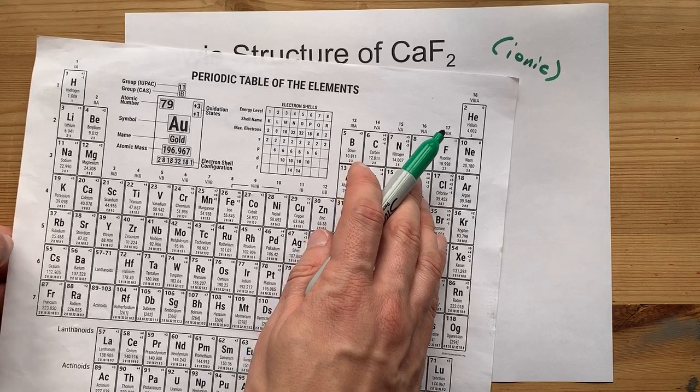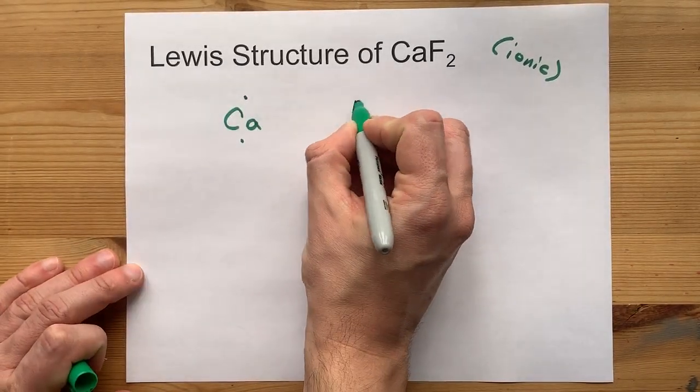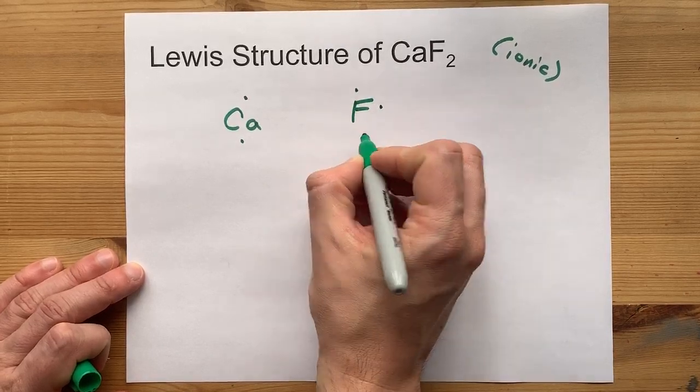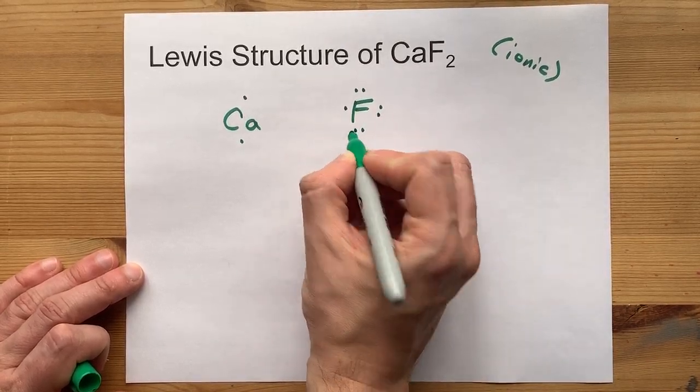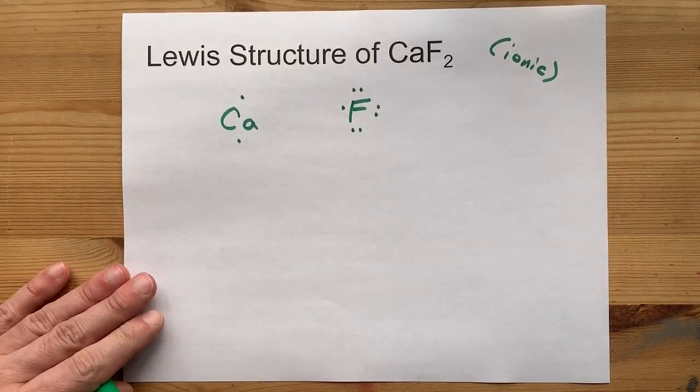Fluorine is in group 17. That means it brings seven valence electrons with itself. One, two, three, four, five, six, seven. Notice that I spread them out before I started doubling them up.